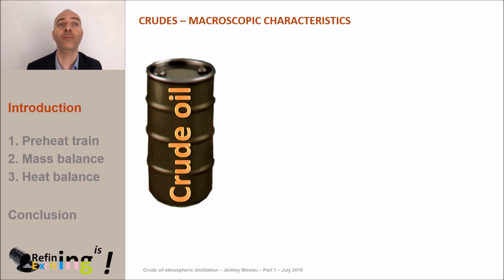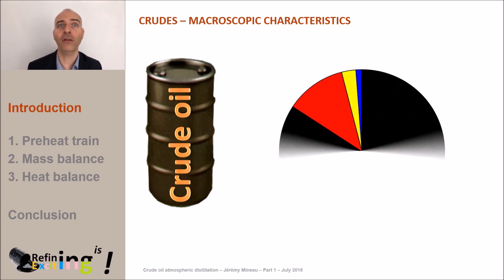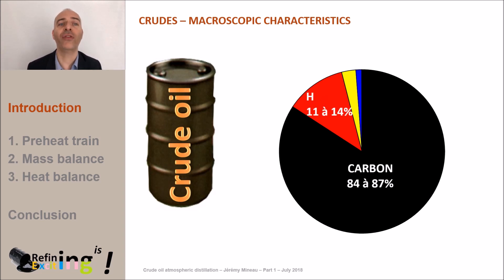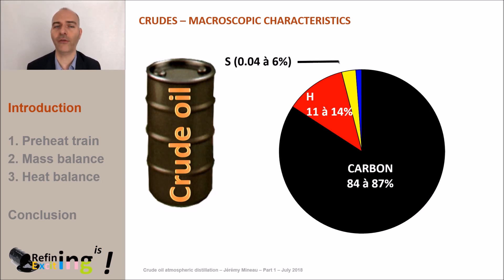Crude oil consists of two major elements: carbon for about 80% by weight and hydrogen for about 13% by weight. The elements that we can find in a crude with a concentration level between 0.5 and 5% are sulfur and nitrogen.